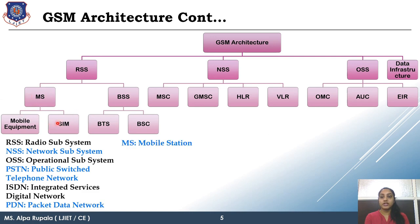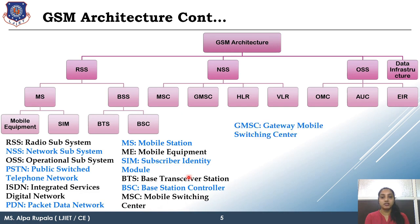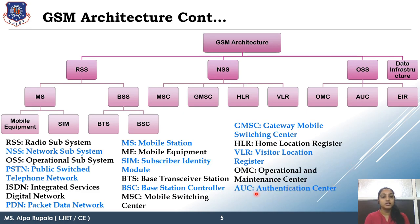In detail: MS is Mobile Station, ME is Mobile Equipment, SIM is Subscriber Identity Module, BTS is Base Trans Receiver Station, BSC is Base Station Controller, MSC is Mobile Switching Center, GMSC is Gateway Mobile Switching Center, HLR is Home Location Register, VLR is Visitor Location Register, OMC is Operational and Maintenance Center, AUC is Authentication Center, EIR is Equipment Identity Register.